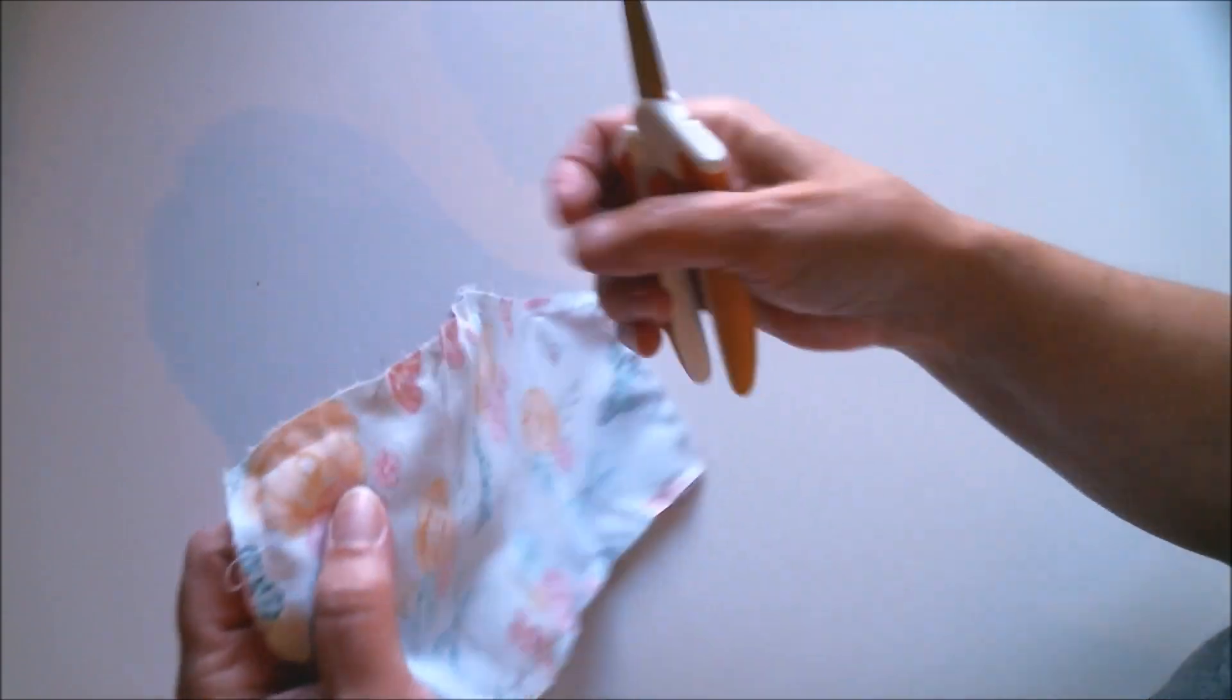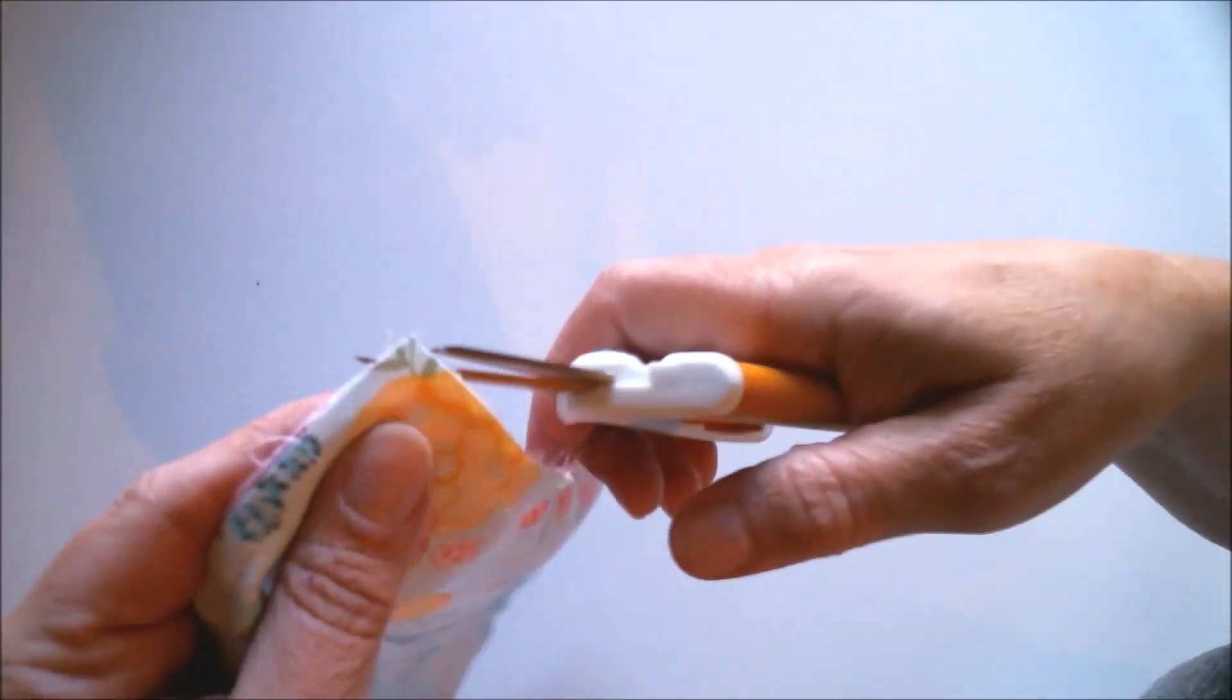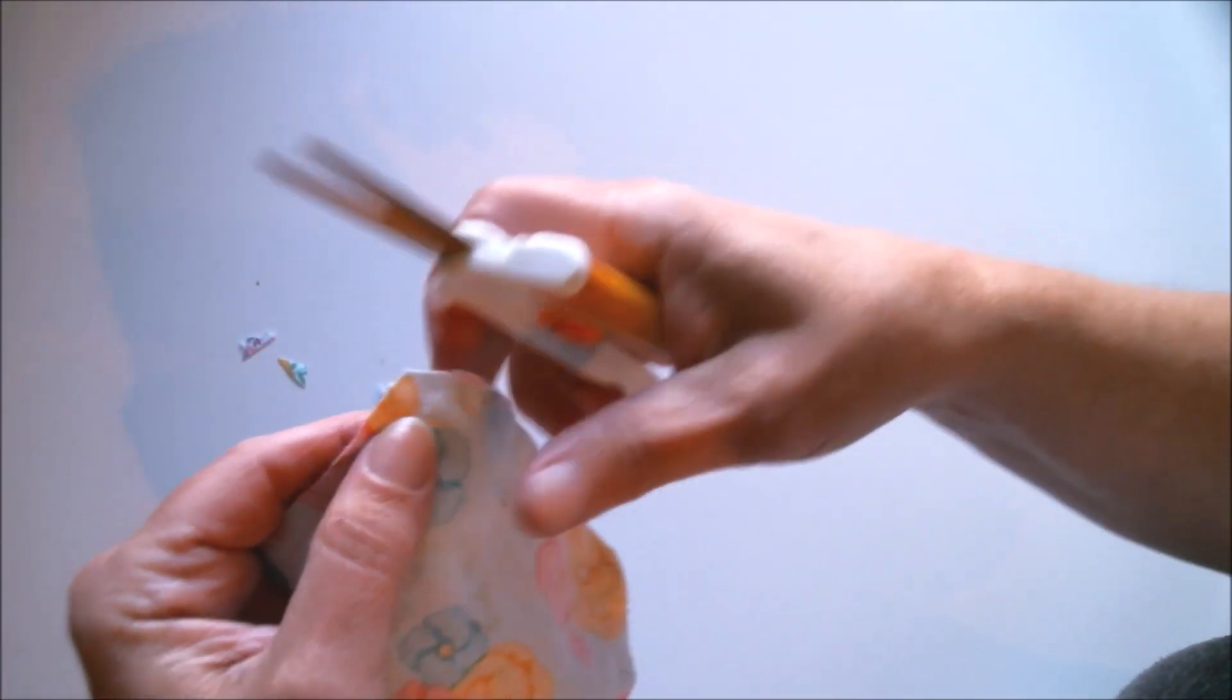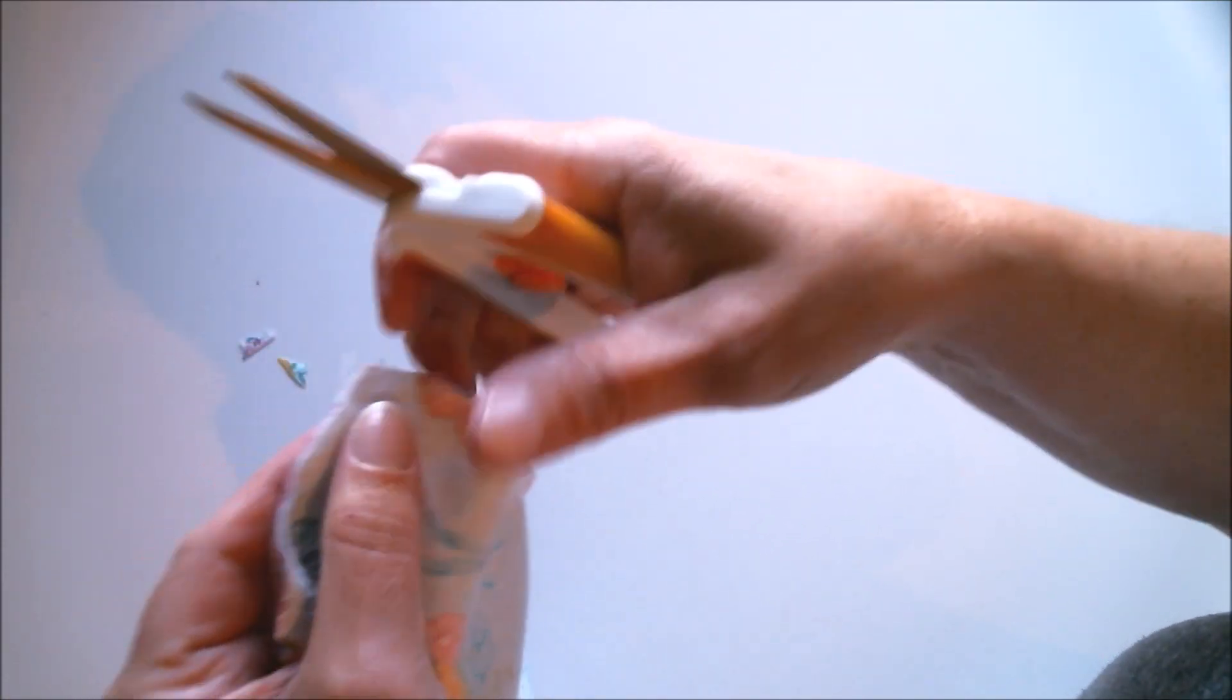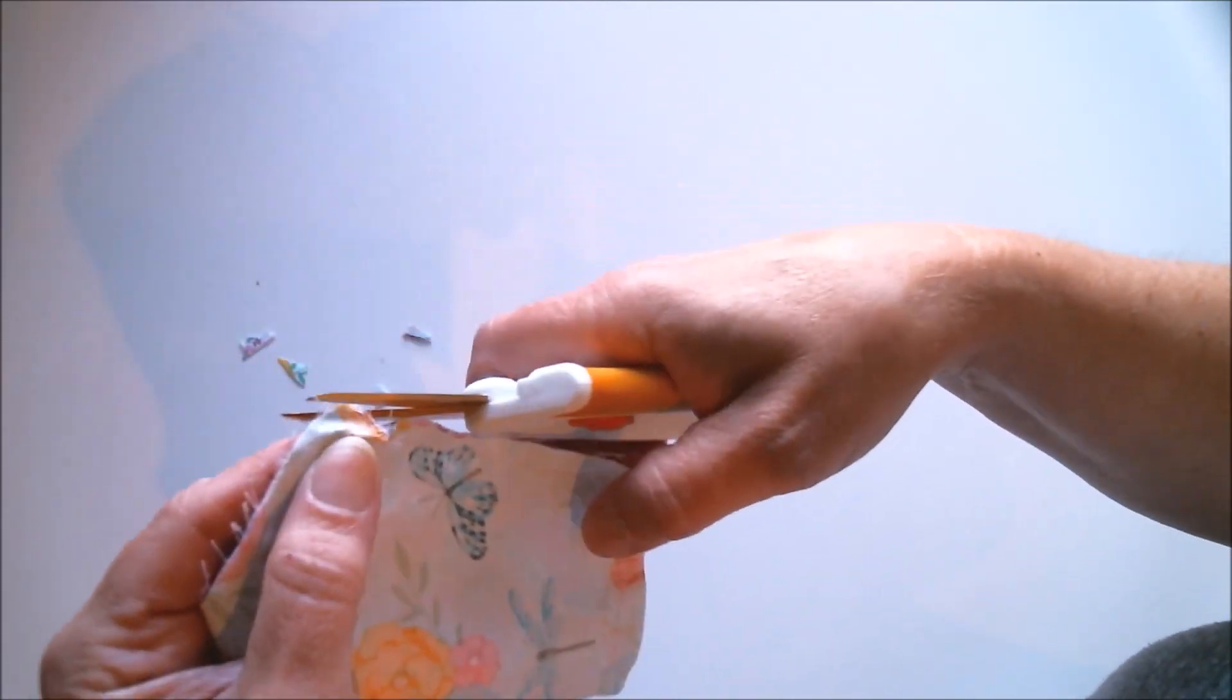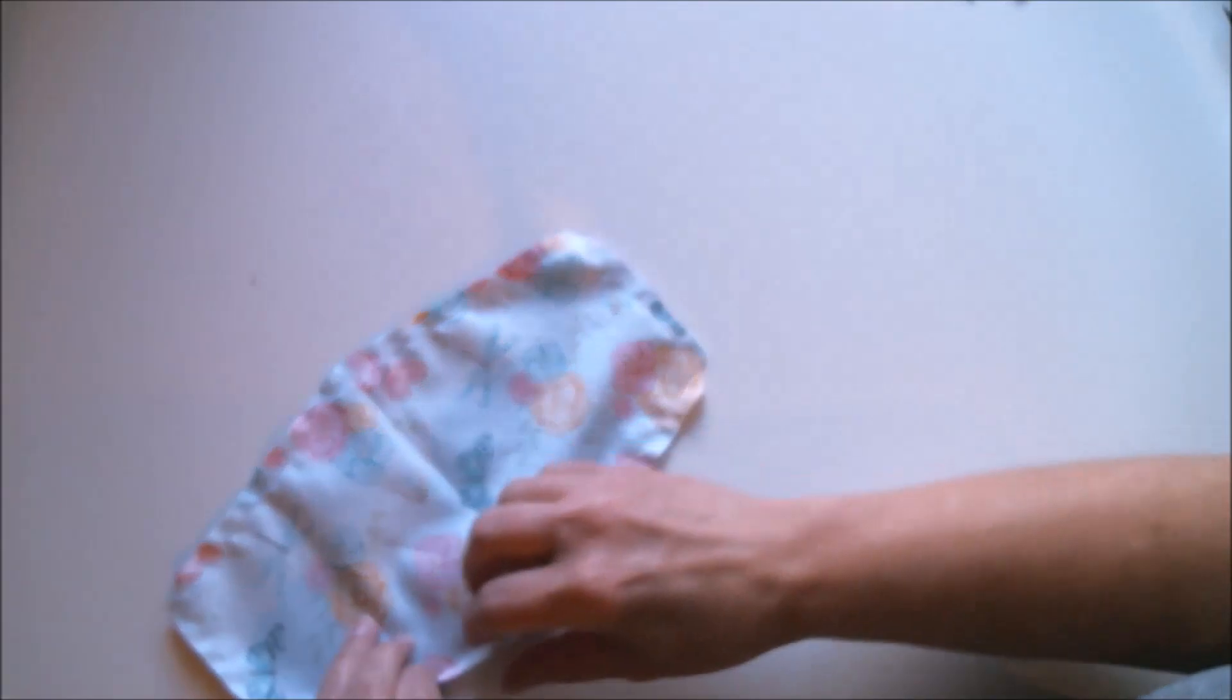So this is what you've got so far. The next thing we're going to do is grab a pair of scissors and cut those corners off. Now don't cut all the way down to the stitching, but just cut off that excess because it's going to make it easier when you turn it right side out to make your corners look nice and sharp.